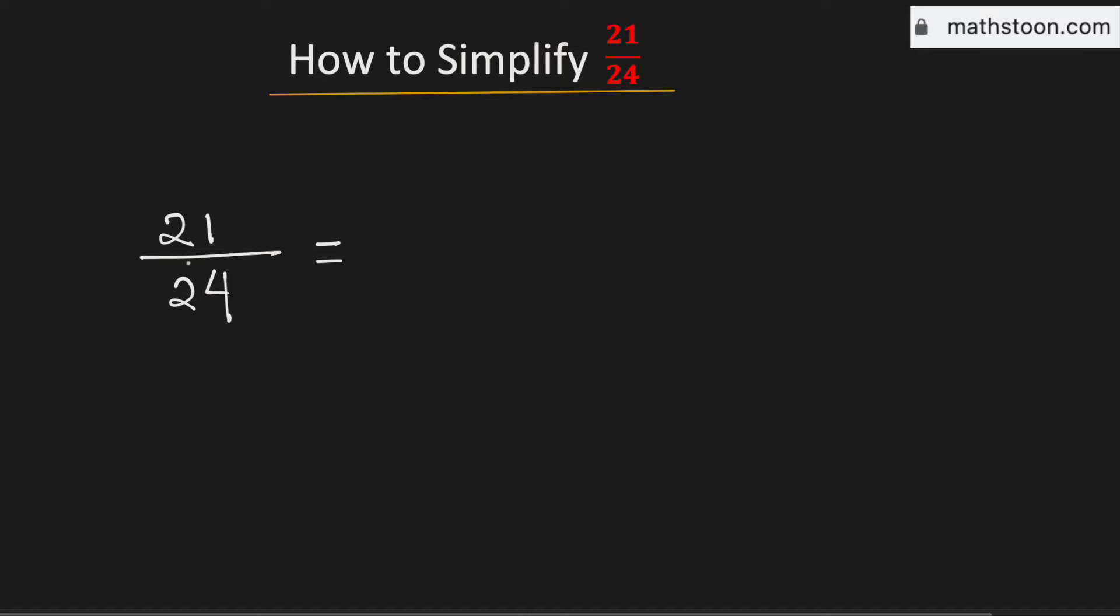3 divides both numbers. So we will write both numbers as a product of 3 and something. 21 can be written as 3 times 7, and 24 can be written as 3 times 8.